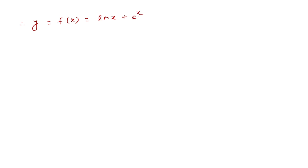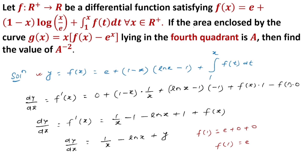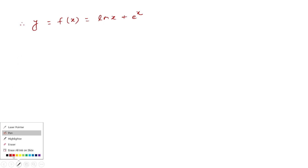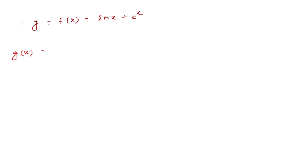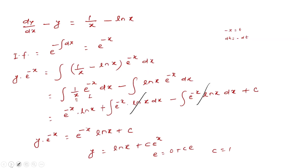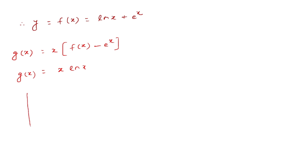Therefore f(x) = ln x + e^x. The curve g(x) is given as x·f(x) - e^x = x·(ln x + e^x) - e^x = x·ln x + x·e^x - e^x. This simplifies to g(x) = x·ln x. We need the area enclosed by g(x) = x·ln x in the fourth quadrant, where x > 0 and g(x) < 0, which occurs for 0 < x < 1.